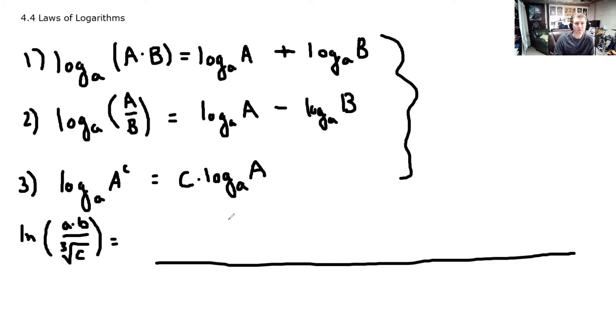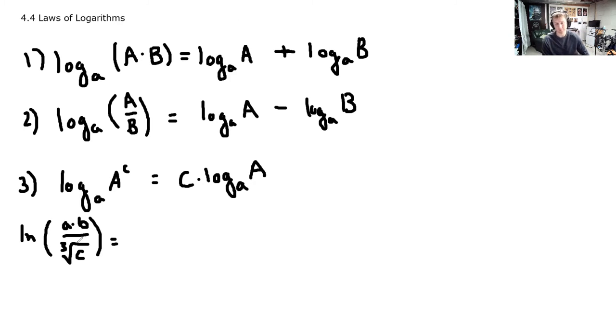And first, you can do whatever you want first. But what I would do first is I would get rid of this fraction. So I'm going to write this as the natural log of A times B minus the log, natural log, of the third root of C. That's just property 2.